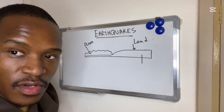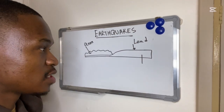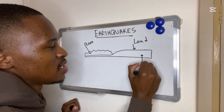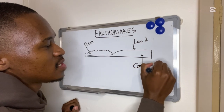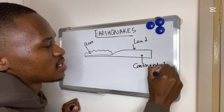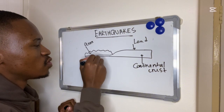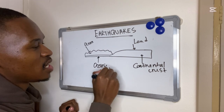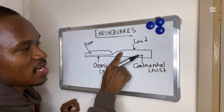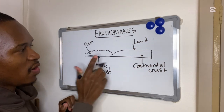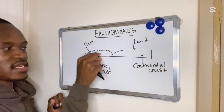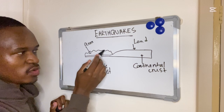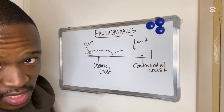As I covered in the previous video on the internal structure of the earth, we have a continental crust and an oceanic crust. Our continental crust is thicker, while our oceanic crust is thin. These waves in the diagram represent the ocean.